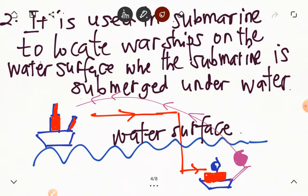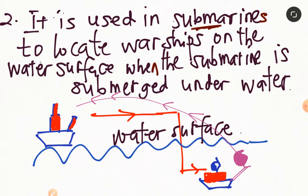Secondly, the mirror periscope is used in submarines. It's used in submarines to locate warships on the water surface when the submarine is submerged under water. So here you see this is our sub. The sub is submerged under water and this is our warship and it is approaching. But then the sailors of this warship cannot see the submarine because the submarine is submerged under water. It's under the water here.